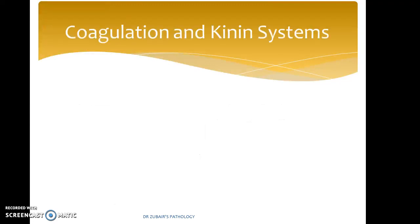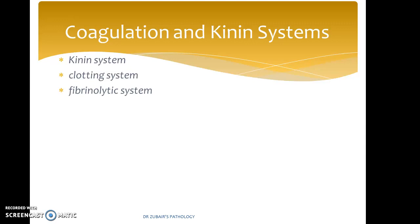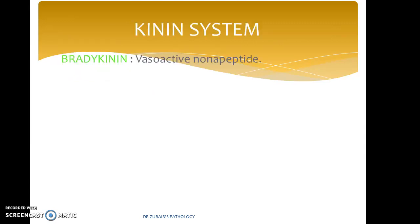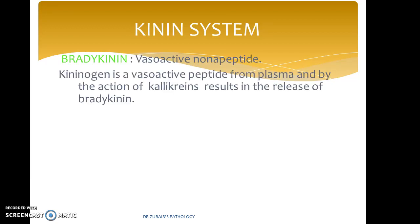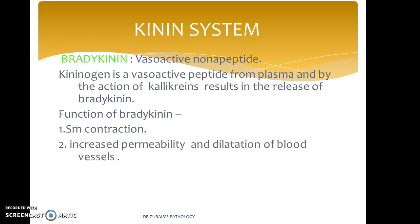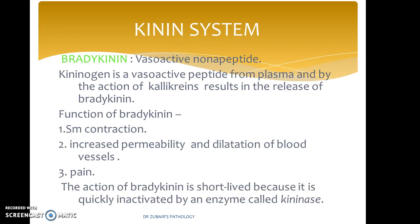Coming to the coagulation and kinin system: when we think about the kinin system, we have to think about bradykinin. Bradykinin is a vasoactive nona-peptide. Kininogen is a vasoactive peptide derived from plasma, and by the action of callicrein results in the release of bradykinin. The functions of bradykinin include smooth muscle contraction, increased permeability and dilation of blood vessels, and it also causes pain. The action of bradykinin is short-lived because it is quickly inactivated by an enzyme called kininase.